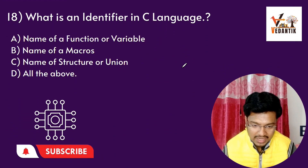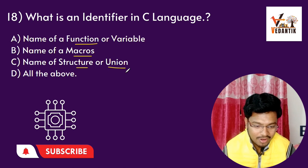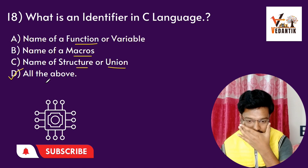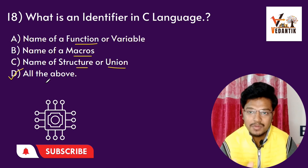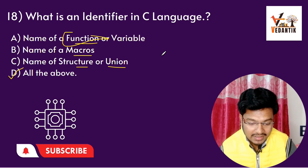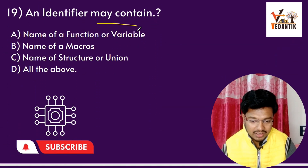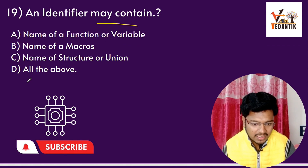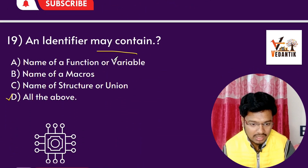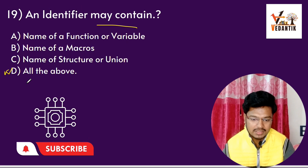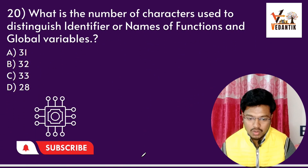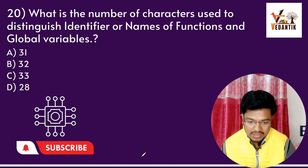Question 13: What is an identifier in C language? An identifier is the name of a function, variable, macros, structure, or union — all of these. The compiler uses identifiers to distinguish them. Question 14: An identifier may not contain — the answer involves certain restricted characters.